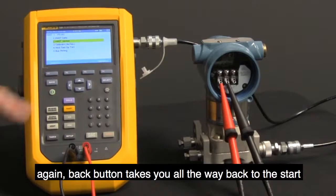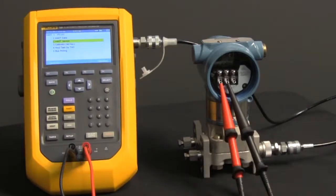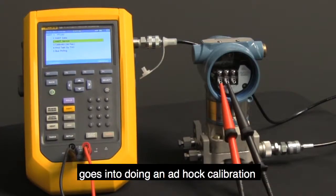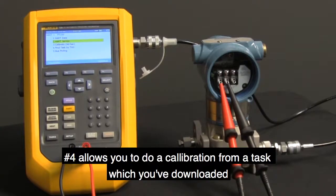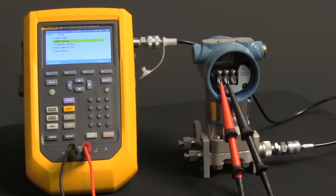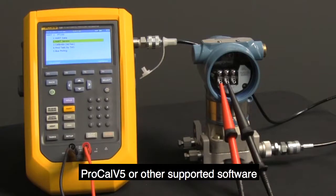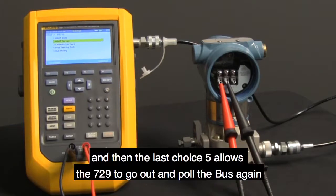Again, back button takes you right back to the start. Choice number three goes into doing an ad hoc calibration. Number four allows you to do a calibration from a task which you've downloaded from DPC track to ProCal V5 or another supported software. And then the last choice, five, allows the 729 to go out and pull the bus again.